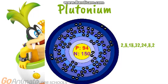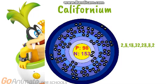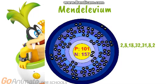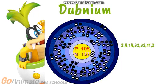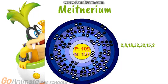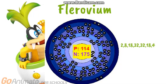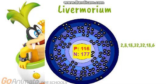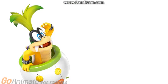Neptunium. Plutonium. Americium. Curium. Berkelium. Californium. Einsteinium. Fermium. Mendelevium. Nobelium. Lawrencium. Rutherfordium. Dubnium. Seaborgium. Bohrium. Hassium. Meitnerium. Darmstadtium. Roentgenium. Copernicium. Nihonium. Flerovium. Moscovium. Livermorium. Tennessine. Oganesson. And that's all of the electron configurations.